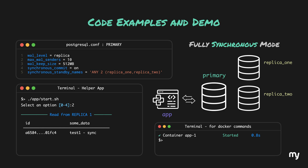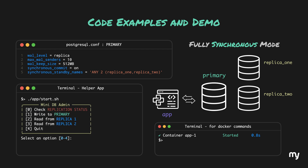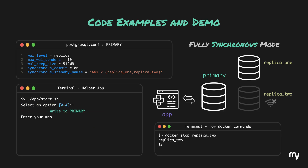Let's do the same with replica2 — as you can see, the data is applied here as well. Now, since this is fully synchronous mode, let's try to shut down replica2 using the docker stop command. Let's try to write data again and see what happens. We can clearly see that our prompt is stuck in waiting. This clearly means that the primary is waiting for an acknowledgement from replica2. Theoretically, if replica2 comes back online, it should pull the latest log and acknowledge the primary, which should unblock our prompt.